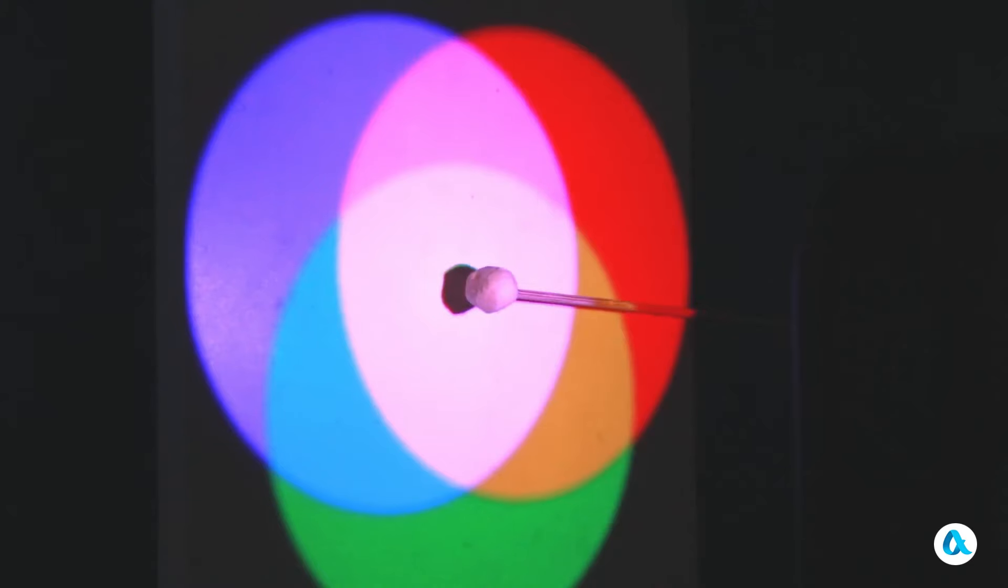Now, let's engage in playing with shadows. When I position the ball in the yellow region, it casts shadows that are red and green in color. In the cyan area, there are shades of green and blue. In the magenta region, there are shades of red and blue. And when I position the ball in the white region, it creates shadows of various colors.